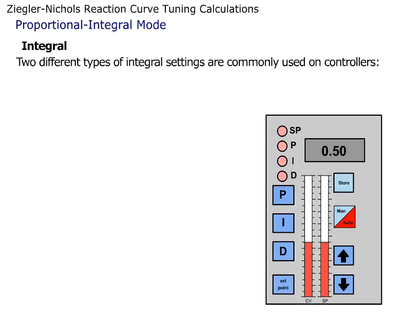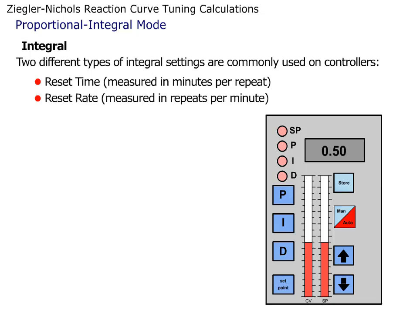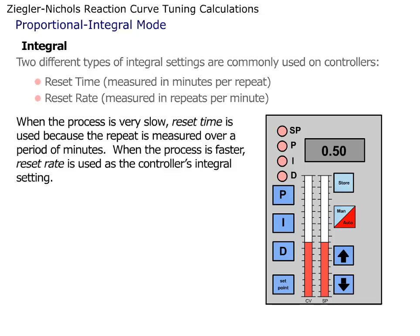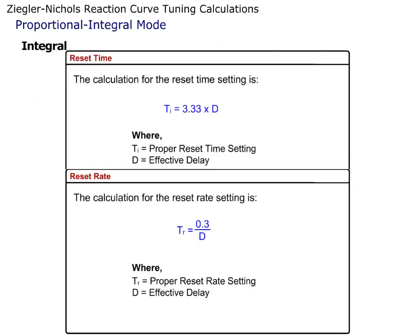Two different types of integral settings are commonly used on controllers: Reset Time, which is measured in minutes per repeat, and Reset Rate, which is measured in repeats per minute. When the process is very slow, Reset Time is used because the repeat is measured over a period of minutes. When the process is faster, Reset Rate is used as the controller's integral setting. These are the formulas for the Reset Time and Reset Rate settings in the Proportional Integral mode.